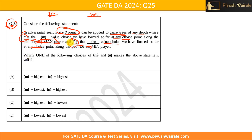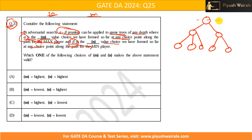This question is related to alpha-beta pruning and the minimax algorithm. Let's consider a tree where we are applying adversarial search. We have level zero, level one, and level two. We apply the minimax algorithm: at level zero we have the max player, and at level one we have the min player.